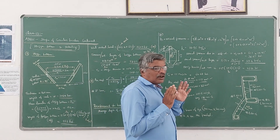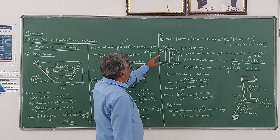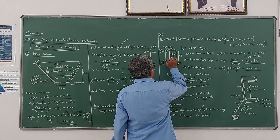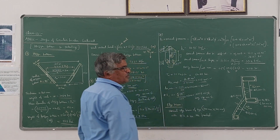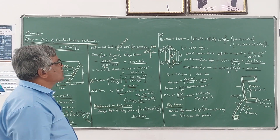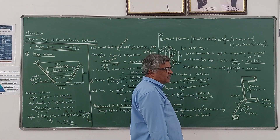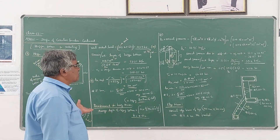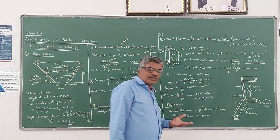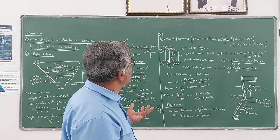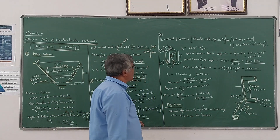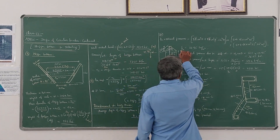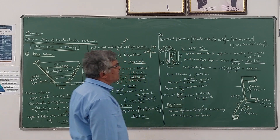Now we have to calculate the normal pressure acting on this hopper bottom, which acts perpendicular to the surface, Pn. This is given by the standard formula: gamma into capital H into cos squared theta. Here phi is tan 25 degree, theta is 45 degree, the inclination of the hopper bottom. Gamma is the density of the stored material, which is 8 kN per meter cube as given. H is 4.66 meters. Substituting all values, we get the normal pressure Pn as 23.95 kN per meter square.